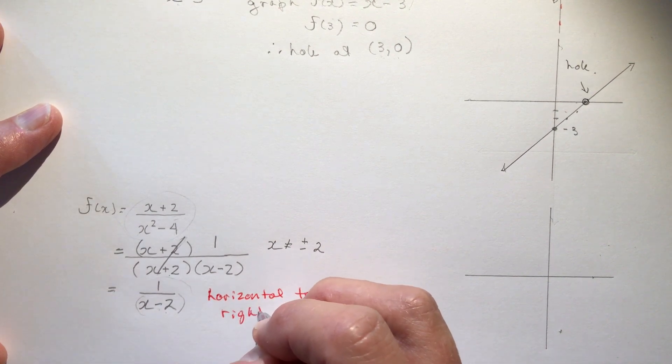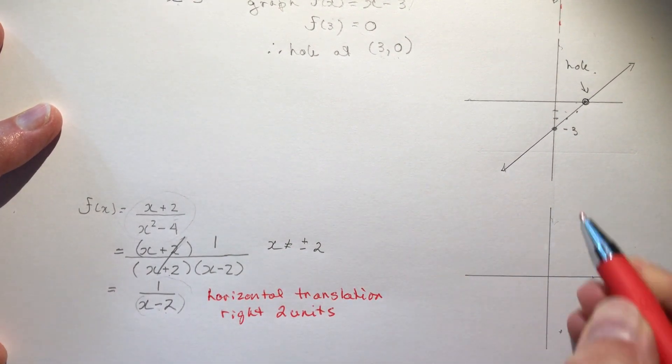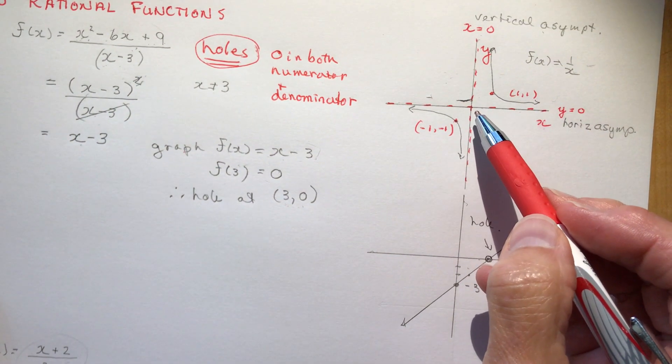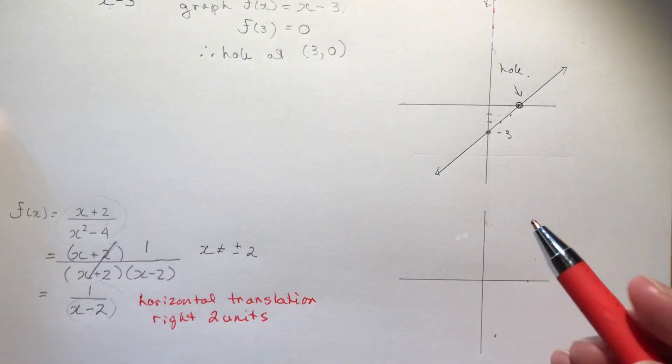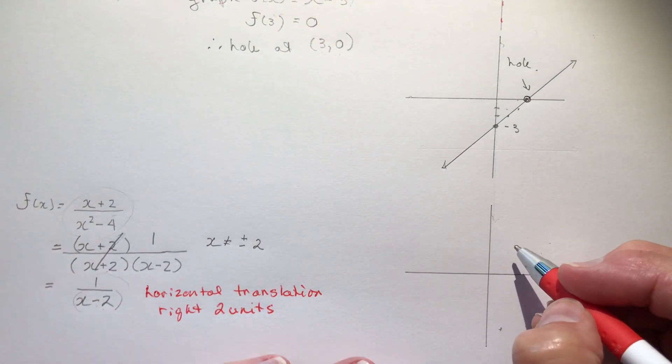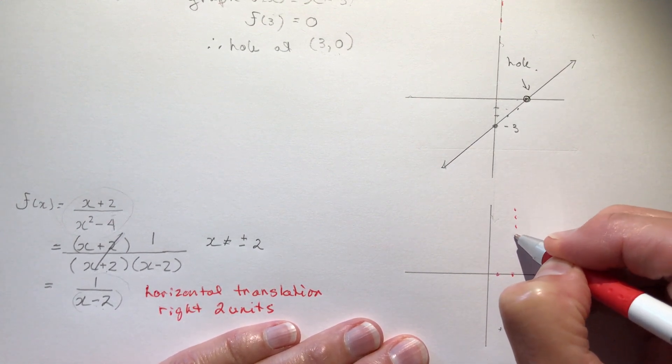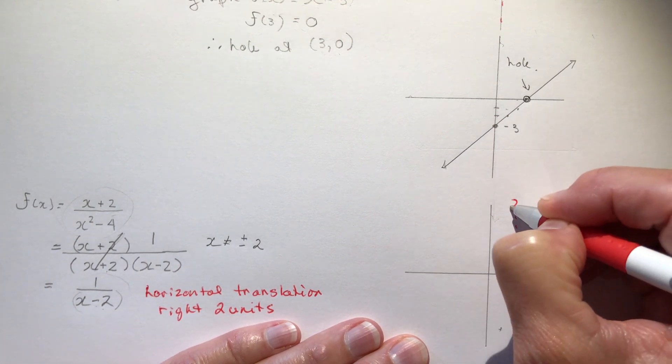Right two units. So it's the graph of 1 over x, that's this one way up here right, it's this one only we're translating to the right two units.